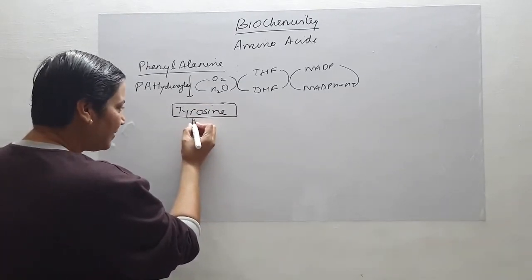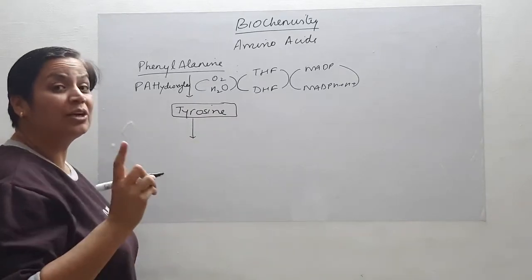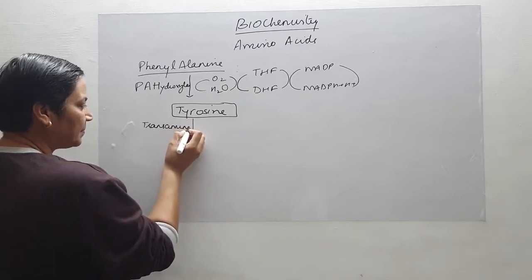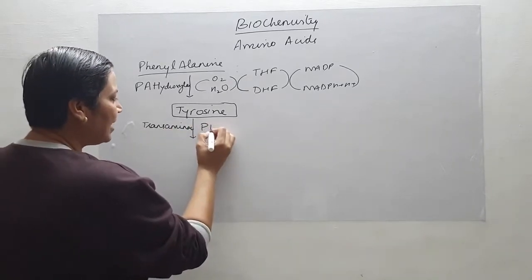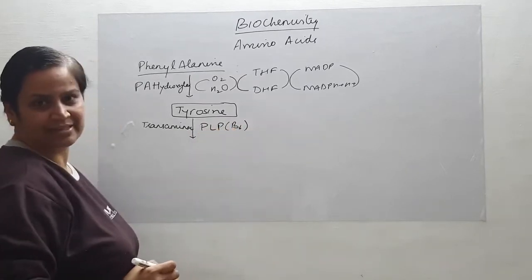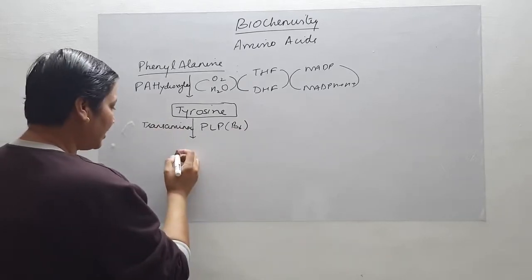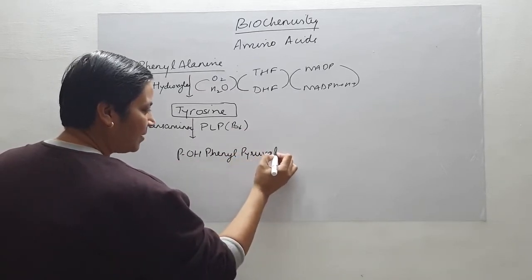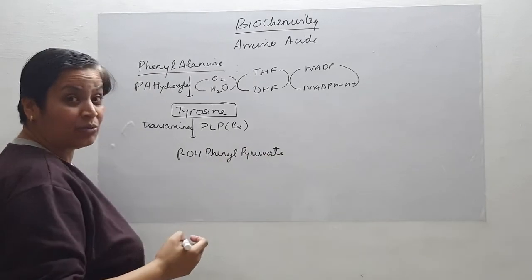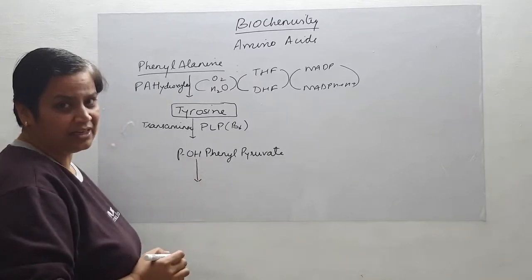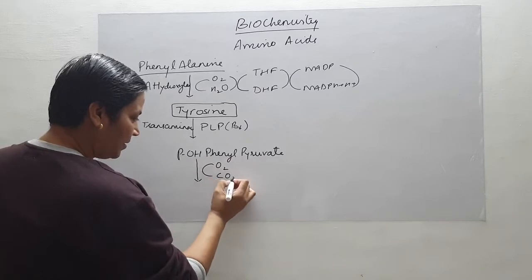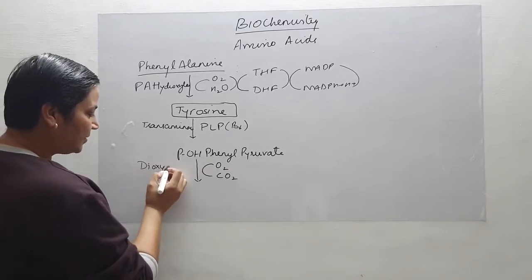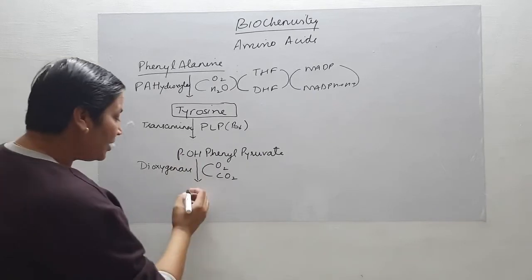This tyrosine, being an amino acid, will undergo transamination in the presence of enzyme tyrosine transaminase. Transamination always requires PLP or vitamin B6 as the coenzyme. So tyrosine is converted into para-hydroxyphenyl pyruvate, which then undergoes oxidative decarboxylation. The enzyme here is para-hydroxyphenyl pyruvate dioxygenase, resulting in homogentisic acid.